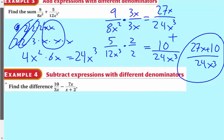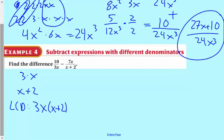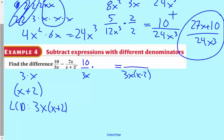As you can see, it's kind of a messy process. So 3x factors into 3 times x, and x plus 2 is just x plus 2, so your LCD is actually going to be everything: 3x times x plus 2, because you have 3 times x, and you have x plus 2 — nothing is common there. Let's start with our first fraction, 10 over 3x, and we're going to multiply this by something to end up with 3x times x plus 2 on the bottom. So I'm missing the x plus 2, so we're going to multiply by x plus 2 over x plus 2.